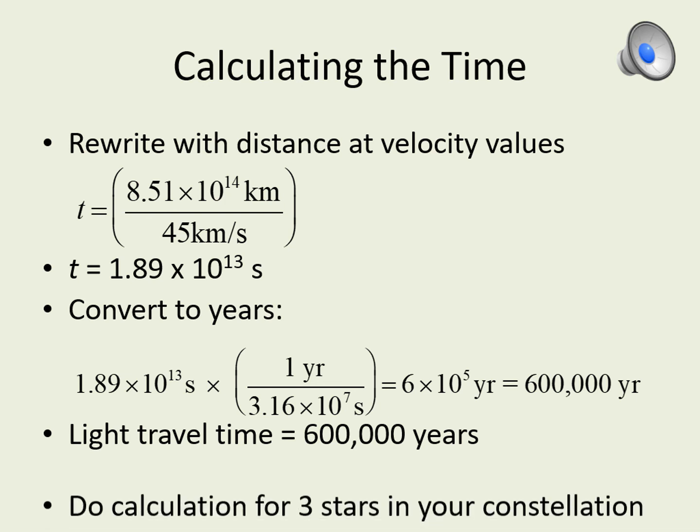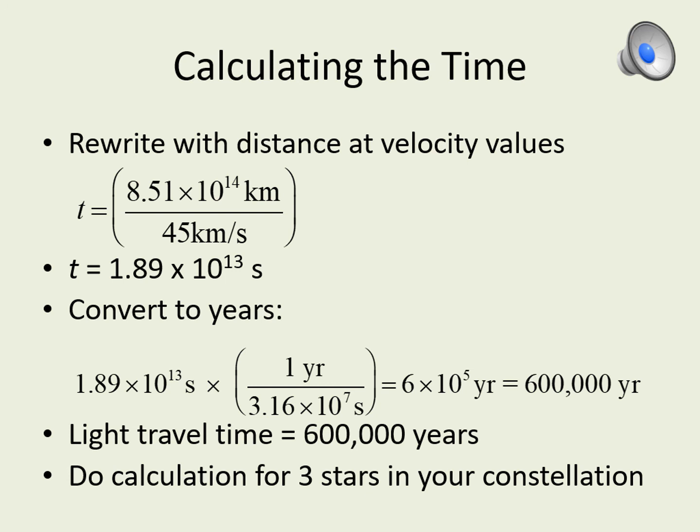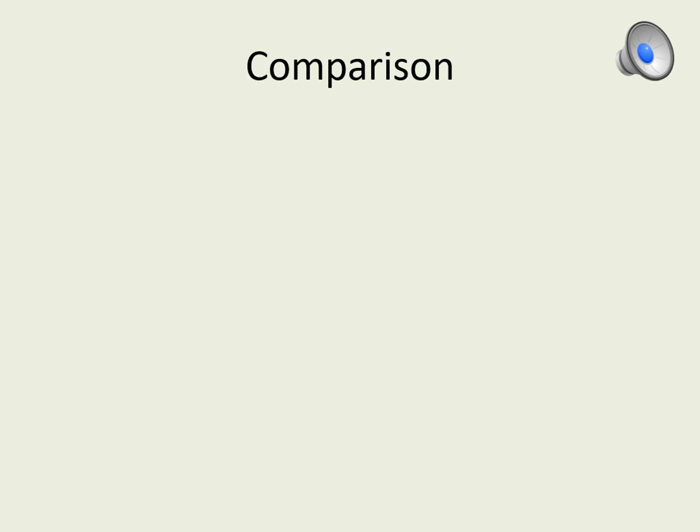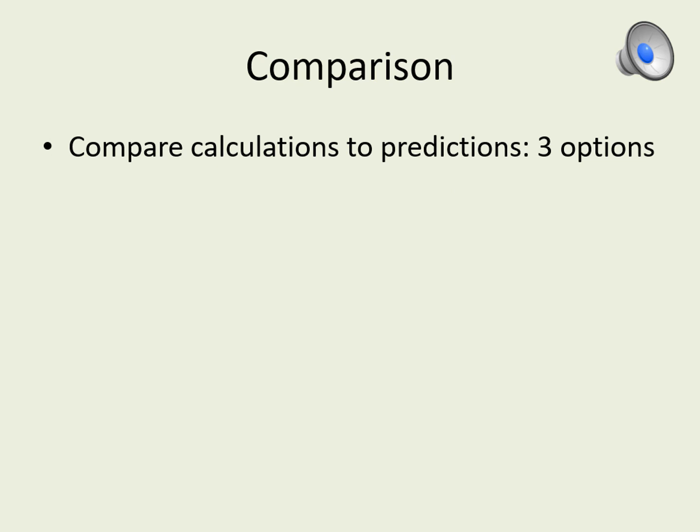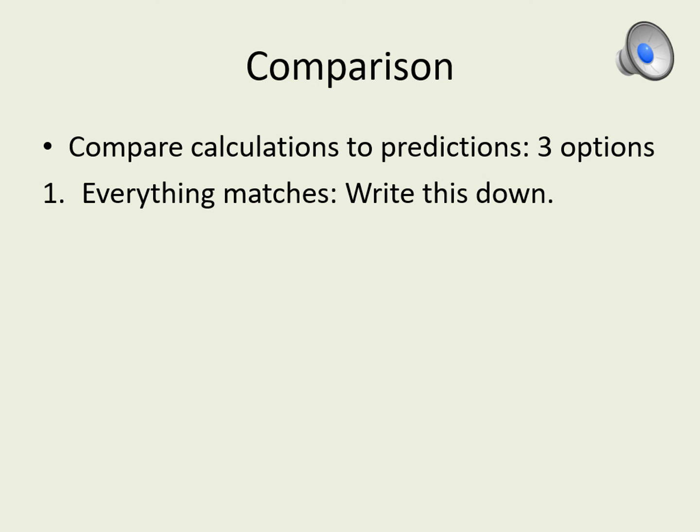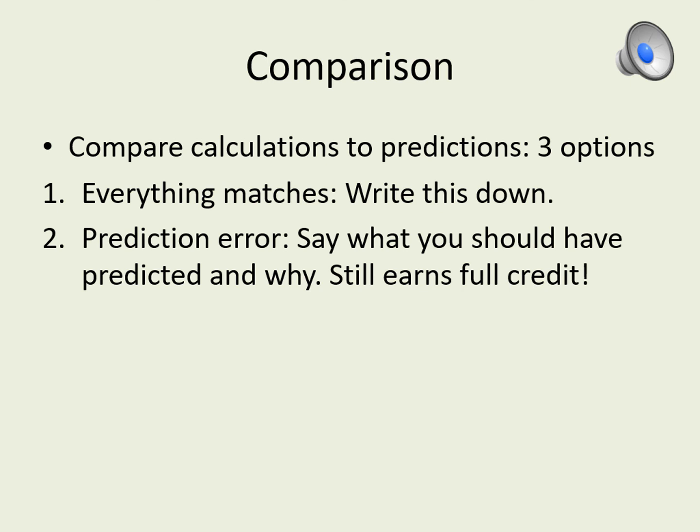With your own constellation, you should do this calculation for three different stars, including the one you predicted will have the longest travel time. Finally, check to see if your answers match your predictions — did the right star have the longest travel time? There are three possibilities: one is that everything matches up, in which case you're done — just write down that they match. Another possibility is that your calculations are fine but your prediction was off. Don't just automatically assume this is the case if the answer disagrees. If you can now show that you understand what your prediction should have said, then you've got full credit on this problem anyway — you don't have to go back and change your prediction to get full credit.